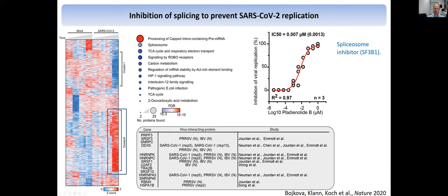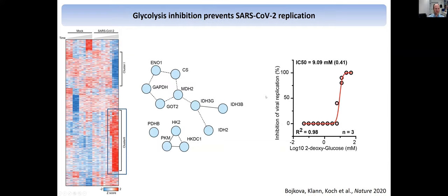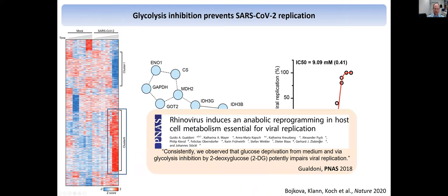So we thought we would test pladienolide B, which is the spliceosome inhibitor for SF3B1. As you can see here, this is really quite potently — with a low nanomolar IC50 — prevented replication of the virus in cells. Also shown here: the axis is inhibition of viral replication, and with increasing doses of the compound, you can see that this prevented viral replication. Another aspect that we found quite striking was carbon metabolism, particularly glycolysis. We tested 2-deoxyglucose, which inhibits hexokinase, and it prevented viral replication as well. This was quite interesting at the time because there had already been papers for rhinovirus where people had tested 2-deoxyglucose in a mouse and saw inhibition of viral replication there.